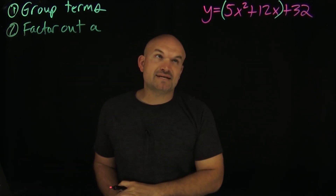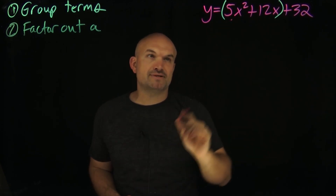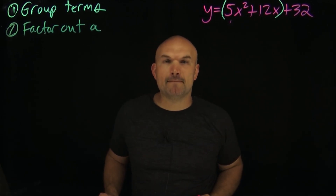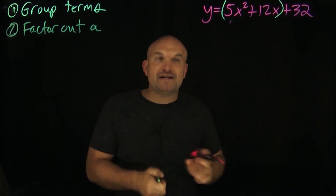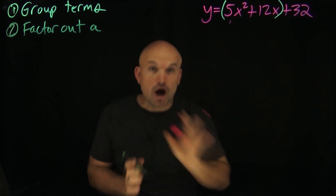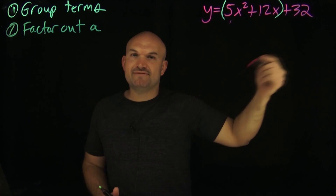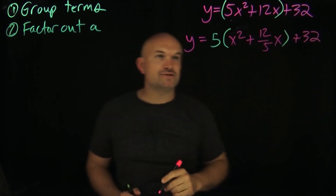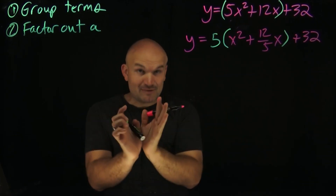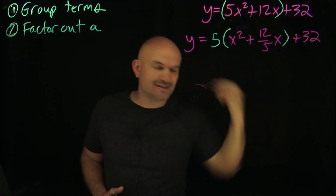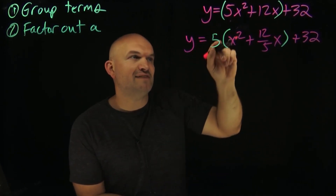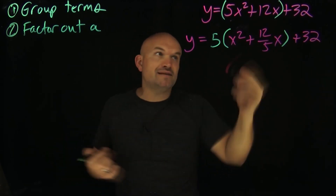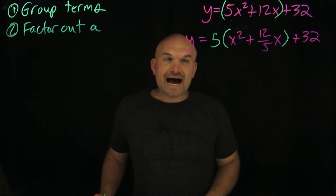When factoring out 'a', it's easy when our number is divisible by both terms. So 5 divides into 5 one time. Unfortunately, 5 does not evenly divide into 12, but that's okay — we can still factor it out; it will just look like a fraction. You can always check your factoring by multiplying back through. By factoring out the 5, I get x squared, and then 12 divided by 5 for the other term. If I multiply 5 times 12 over 5, the 5s cancel, leaving me with 12x — so this is a perfectly factored expression.